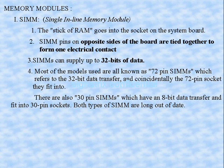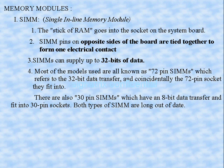Both types of SIMs are largely out of date now. We have two types of package in SIM: the 72-pin package and the 30-pin package. Nowadays newer technologies are used, so SIM is considered an older technology. Out of the 72 pins, 32 are used for data transfer. That covers Single Inline Memory Module.